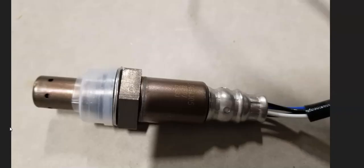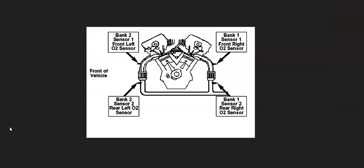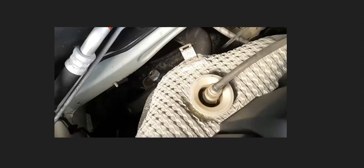If you've checked the MAF sensor, fuel pressure is good, and there are no vacuum leaks, the next thing to check is the oxygen sensor — specifically the bank 1 upstream oxygen sensor. It's always a good idea to get a diagram of the oxygen sensors for your particular engine. For example, on a 2005 Kia Sportage, bank 1 sensor 1 is the upstream oxygen sensor — that's the one reporting this issue to the onboard computer, and the one to test or replace.